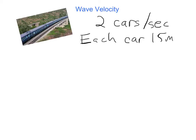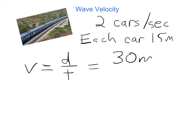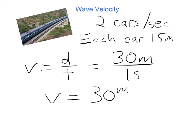There are two cars going by per second and each car is 15 meters. I remember that speed is distance over time. So I ask myself, how far is this train going in a certain period of time? If I have two 15-meter cars go by every second, then 30 meters of car goes by in one second. So the train must be going 30 meters per second.